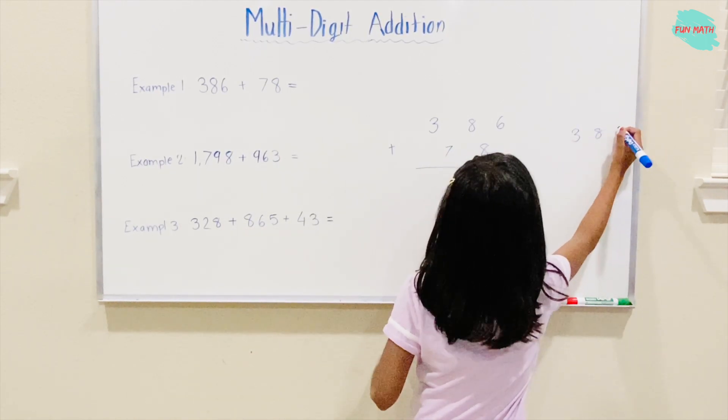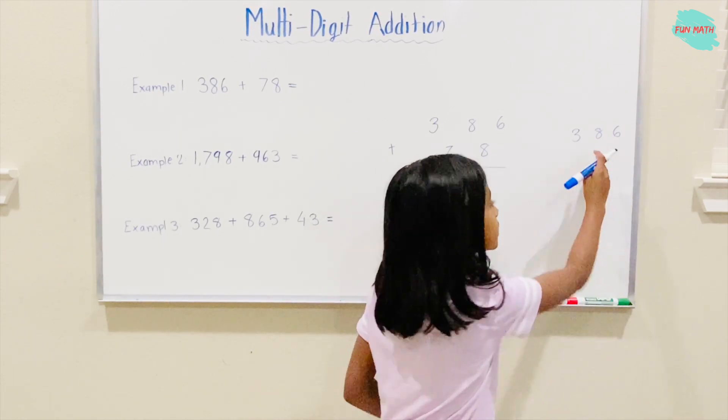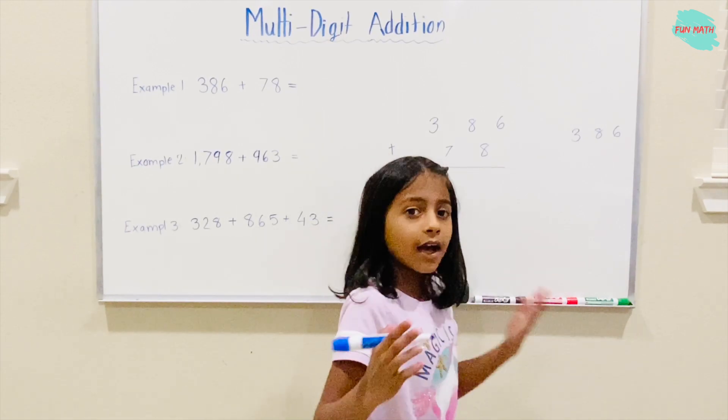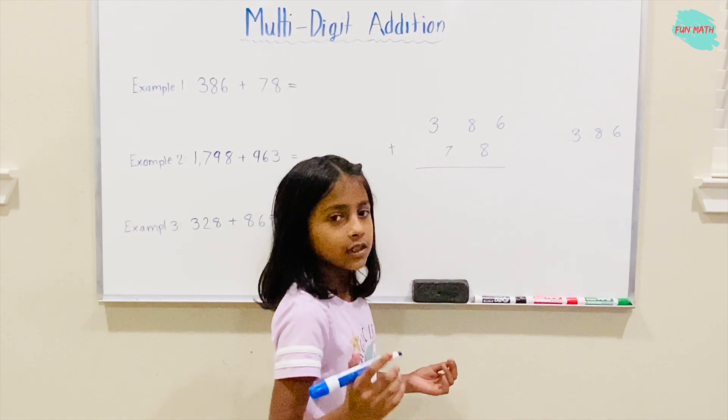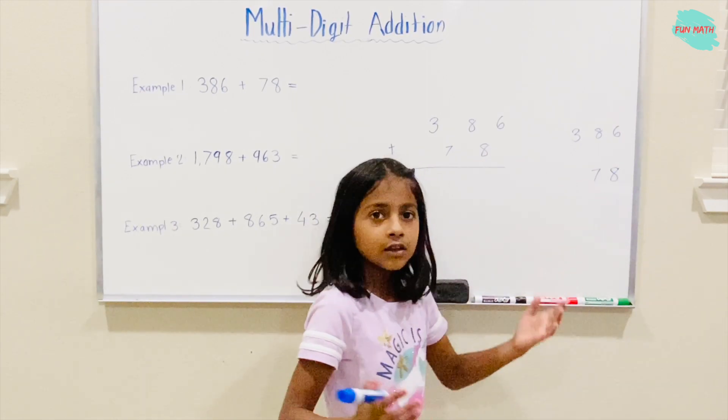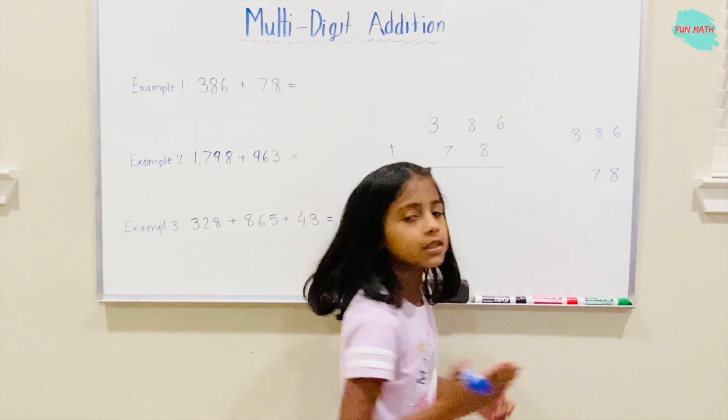You know that 6 is in the ones place, 8 is in the tens place, 3 is in the hundreds place. Now you have to find out what 78 is. So 8 is in the ones place, 7 is in the tens place.